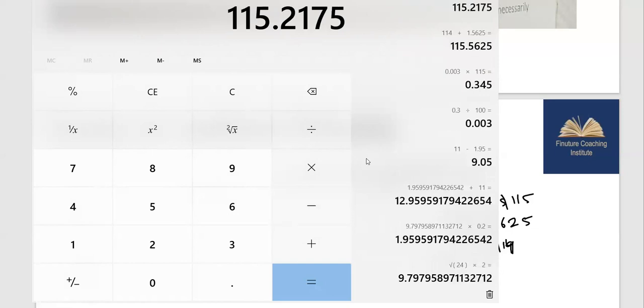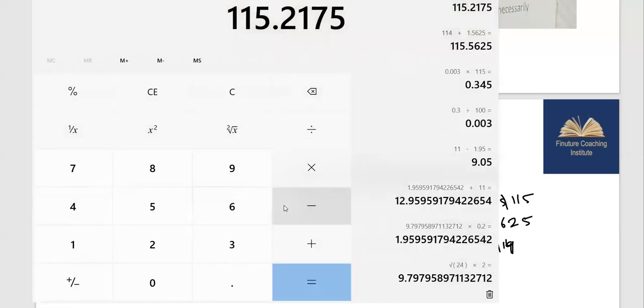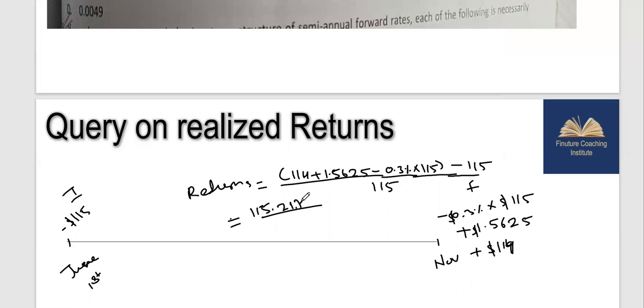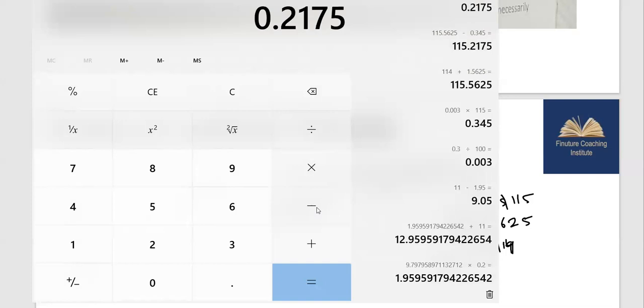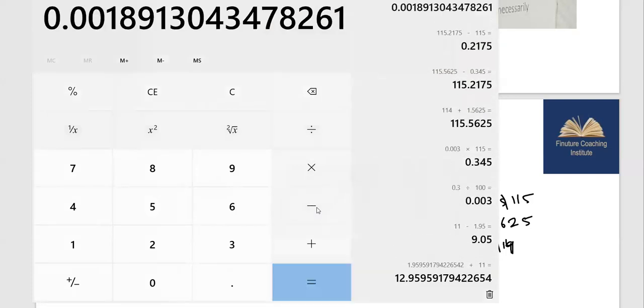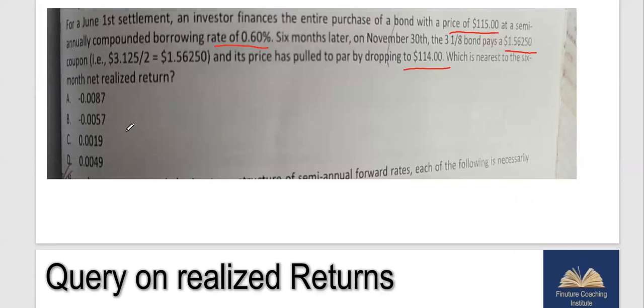This is my final amount that I will have. My complete returns would be equal to $115.1.2175 minus $115 divided by $115. Let's calculate this. It comes around 0.0189. If I round it off, it's 0.0019. That's your option C.